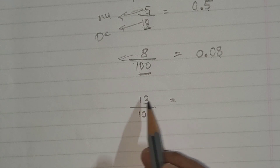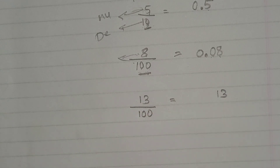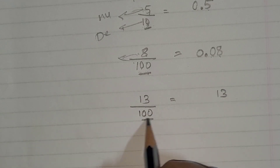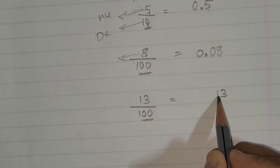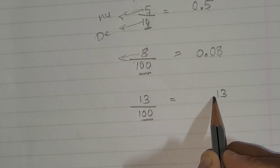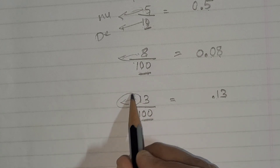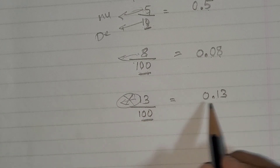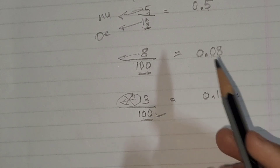One more example: 13 by 100. Write the numerator as it is - 13. The denominator has two zeros, so place the decimal point after two digits. We already have two digits (1 and 3), so no extra zero is needed. Writing from right to left: point, then 13 - the answer is 0.13.